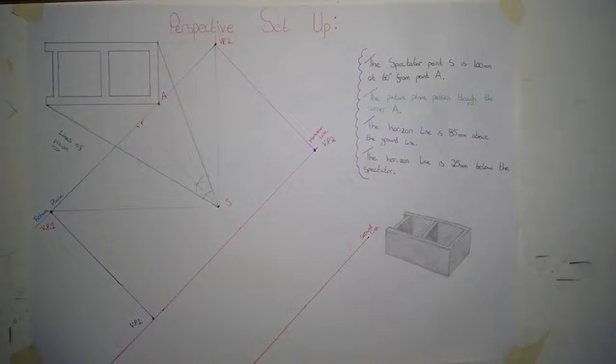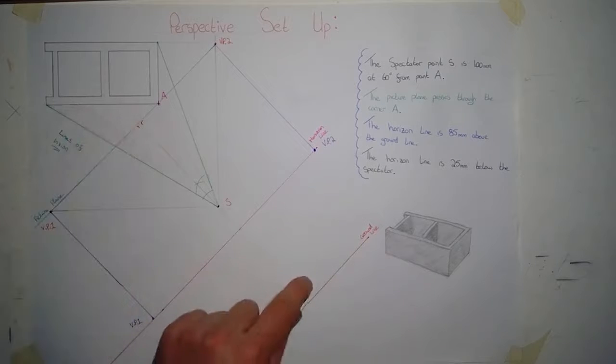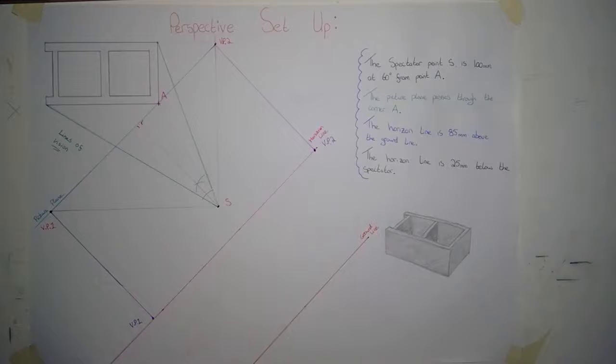Welcome to part 2 of the perspective question. In part 1, I covered the perspective setup which we have here. Now in part 2, I'm going to draw the block shape, the 3D representation here in the plan view, down in the perspective view between the ground line and the horizon line.